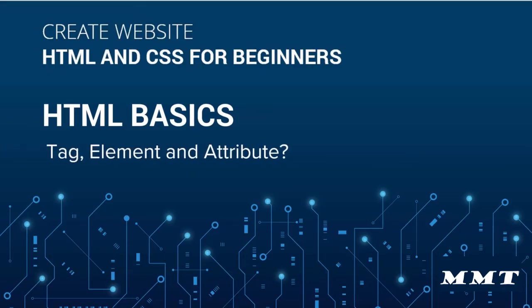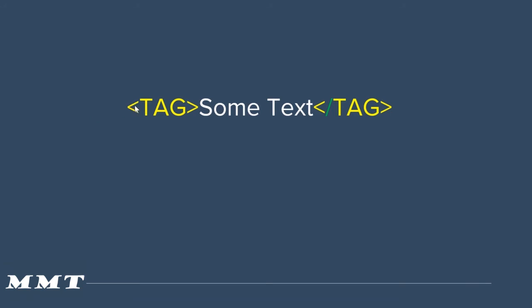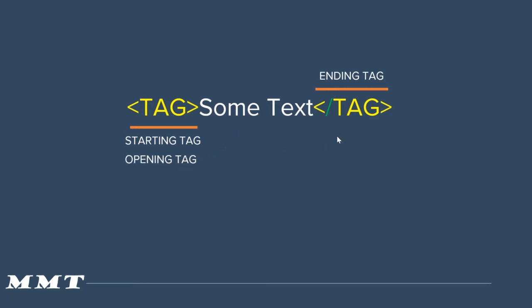Hello and welcome to this lecture. Let's understand what is a tag, element, and attribute. Tags look something like this: you have a less-than symbol, then the name of the tag, then a greater-than symbol, then a closing tag which is less-than forward-slash and the same name. The starting tag is called the opening tag, and the one ending with a forward slash is called the closing or ending tag.